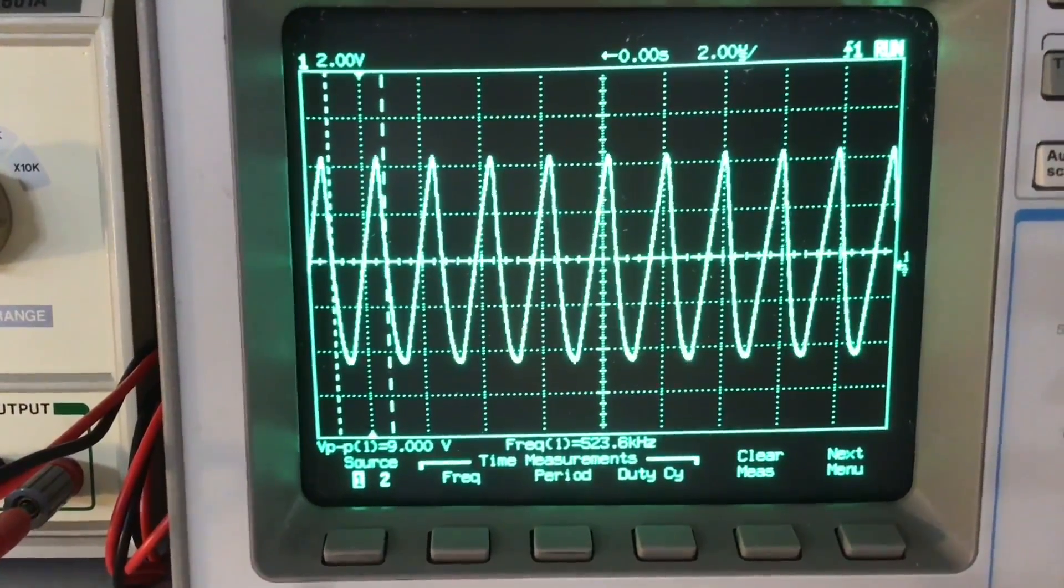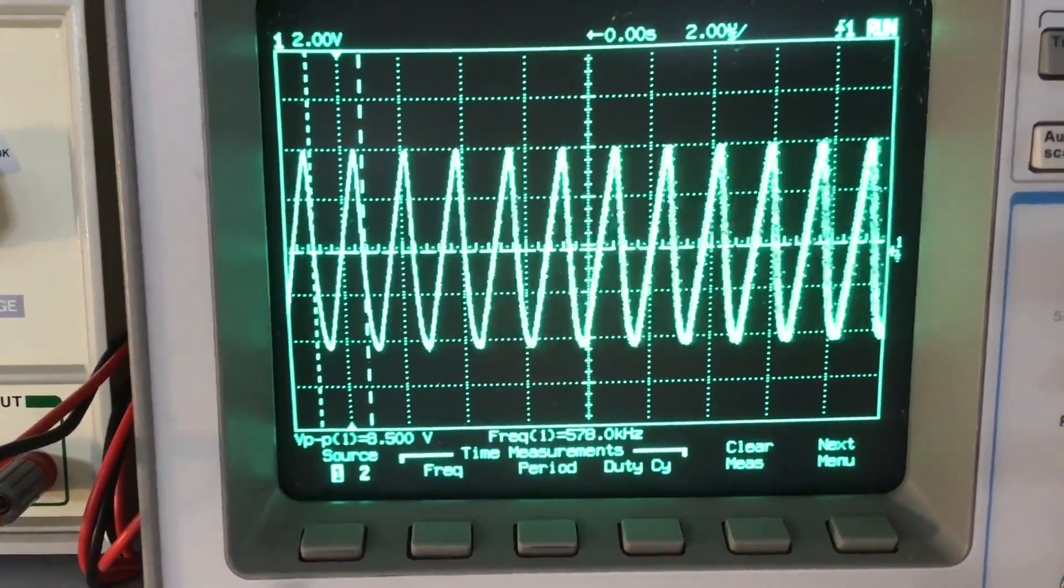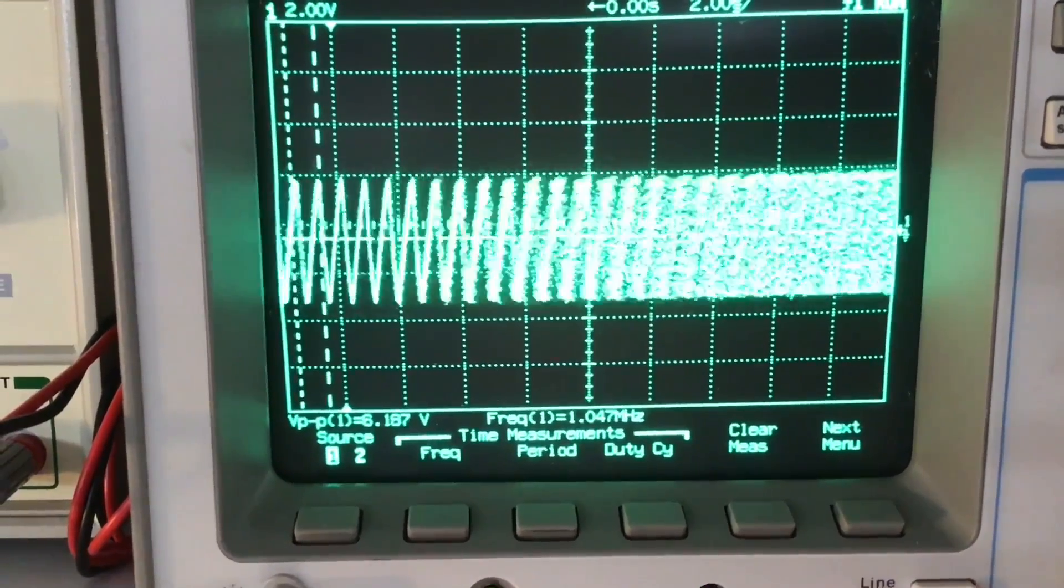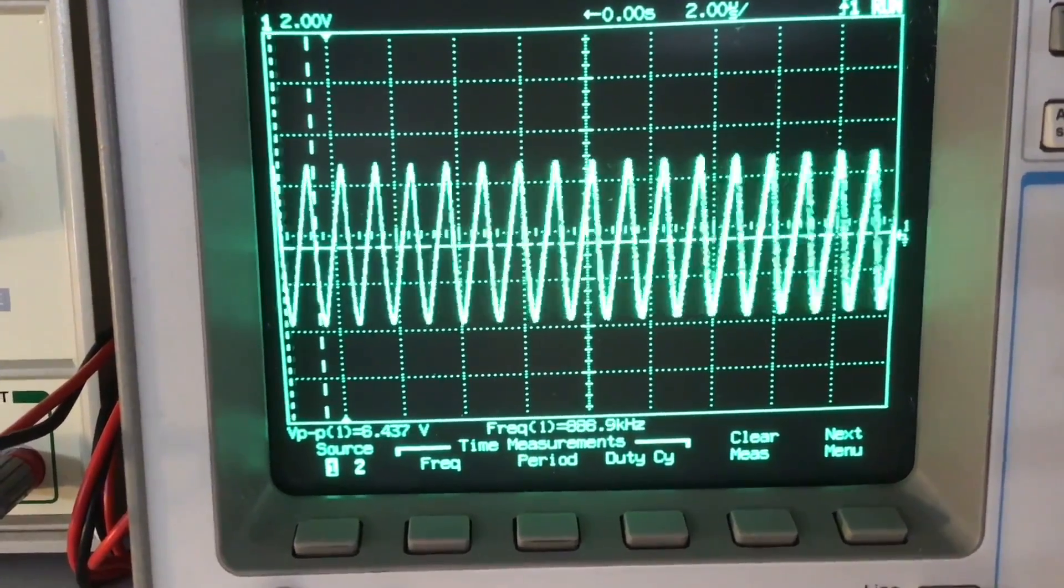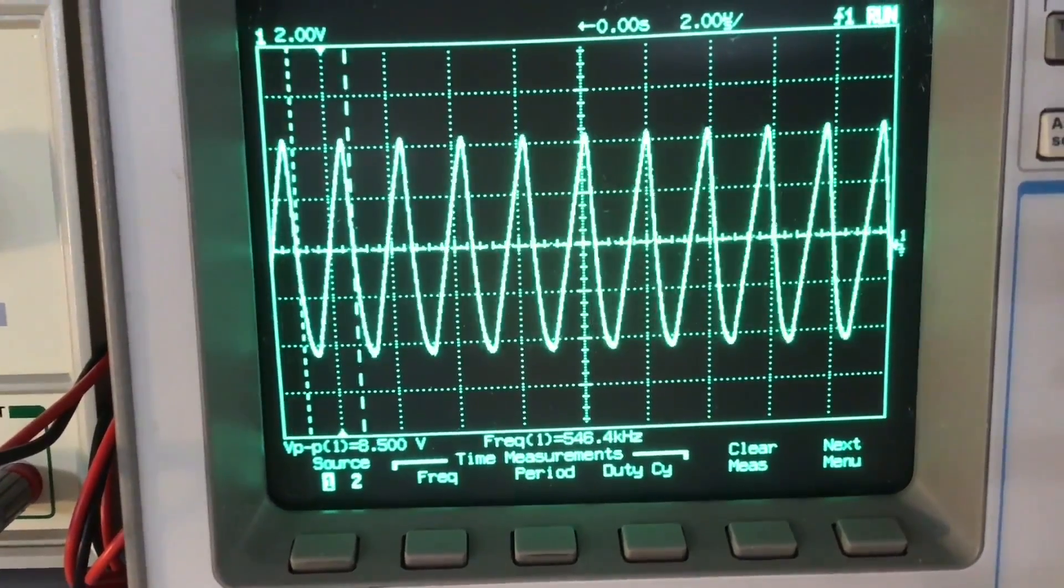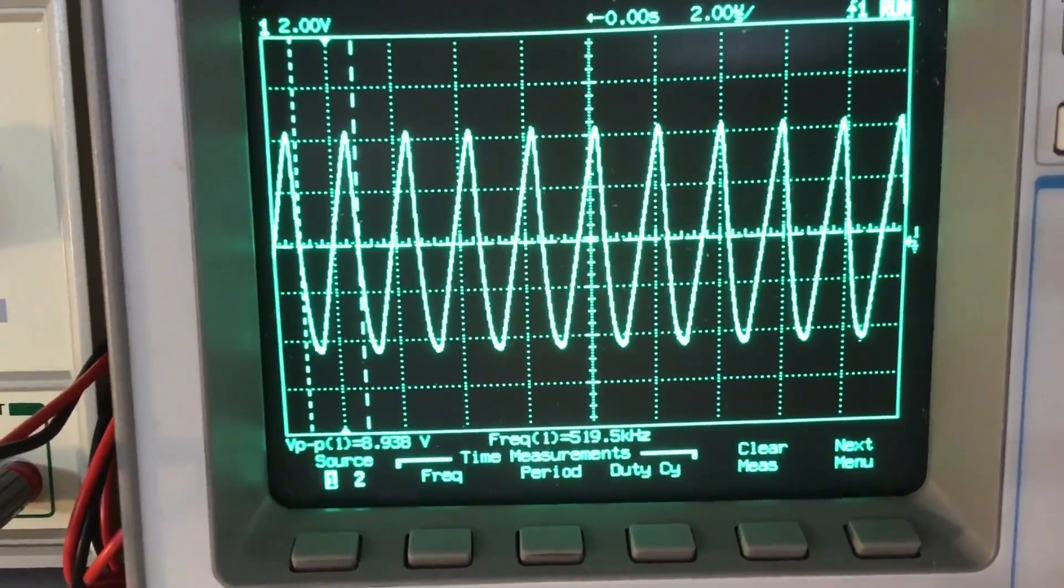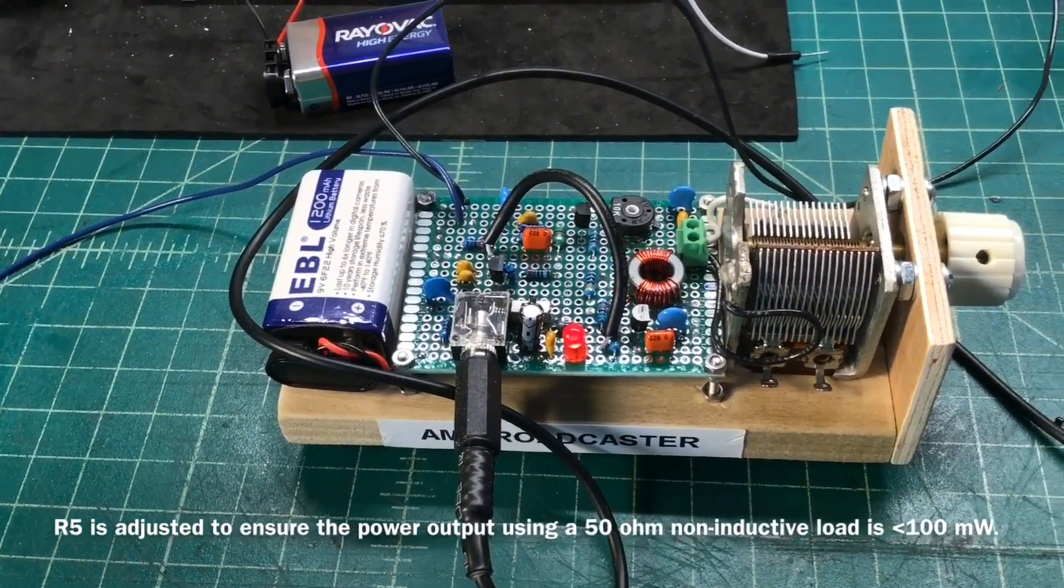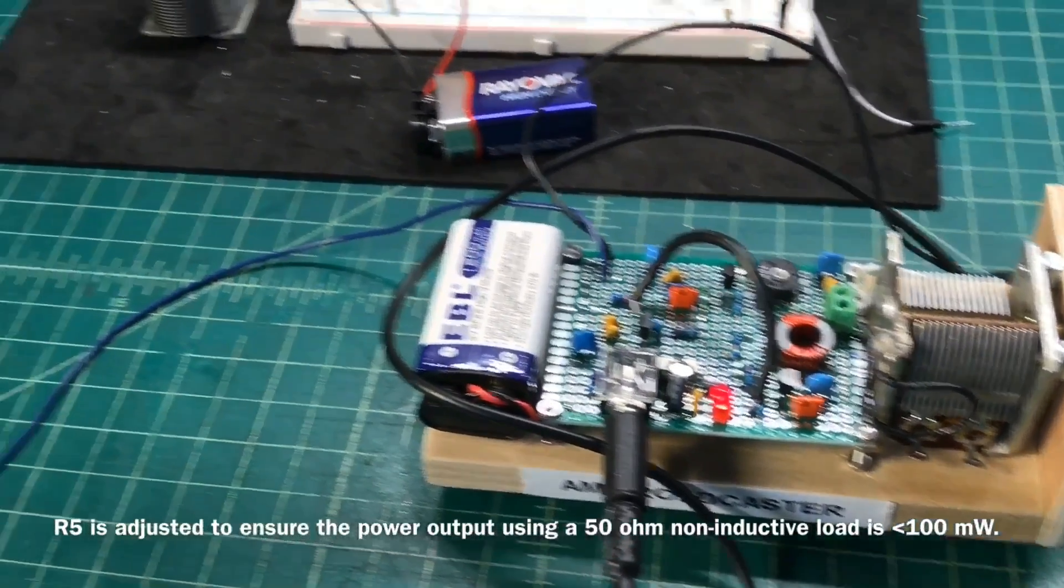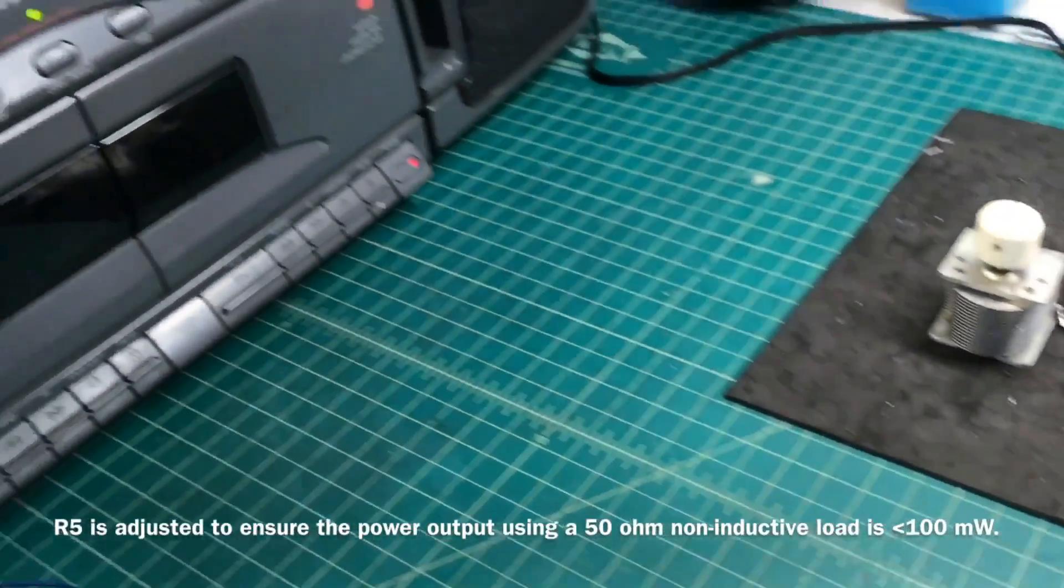So here's a look at the final output itself, the sine wave as I tune across the broadcast band. This is not under load. So you can see the peak-to-peak voltage itself. Again, as I noted, not under load. And this particular transmitter is well under the 100 milliwatt regulation for the states. So with that said, a disclaimer.